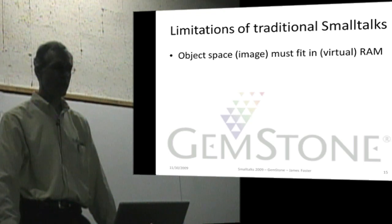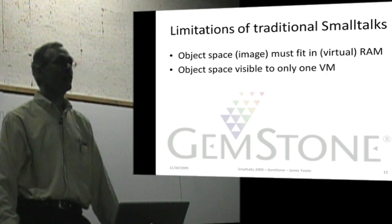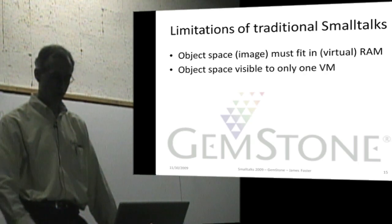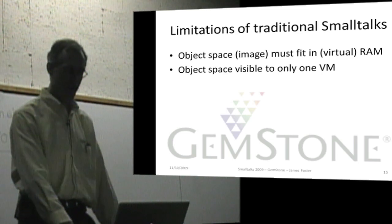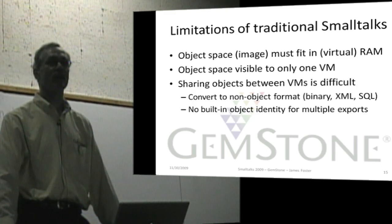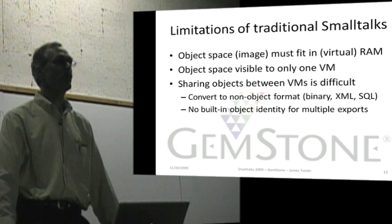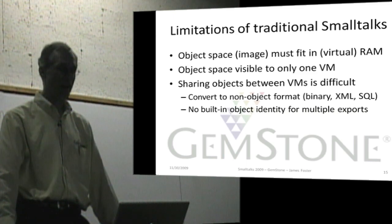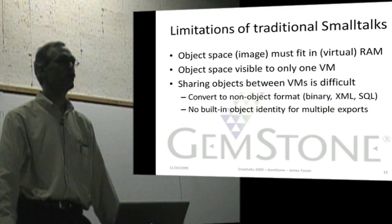First, the object space must fit into RAM, so you're limited in the number of objects you can reference by how much will fit in RAM. Next, the object space is visible to only one virtual machine, so you can only interact with one object space from one virtual machine. Sharing objects between virtual machines is challenging — you need to convert to a non-object format: binary fileouts, XML, or go out to a SQL database. To share objects you need to convert them into something other than objects.